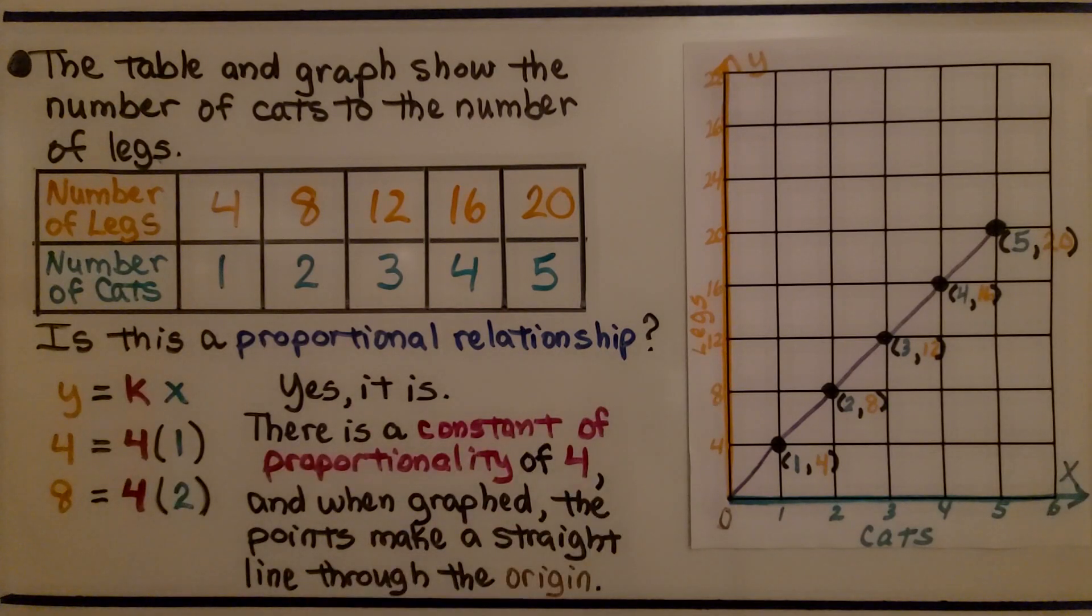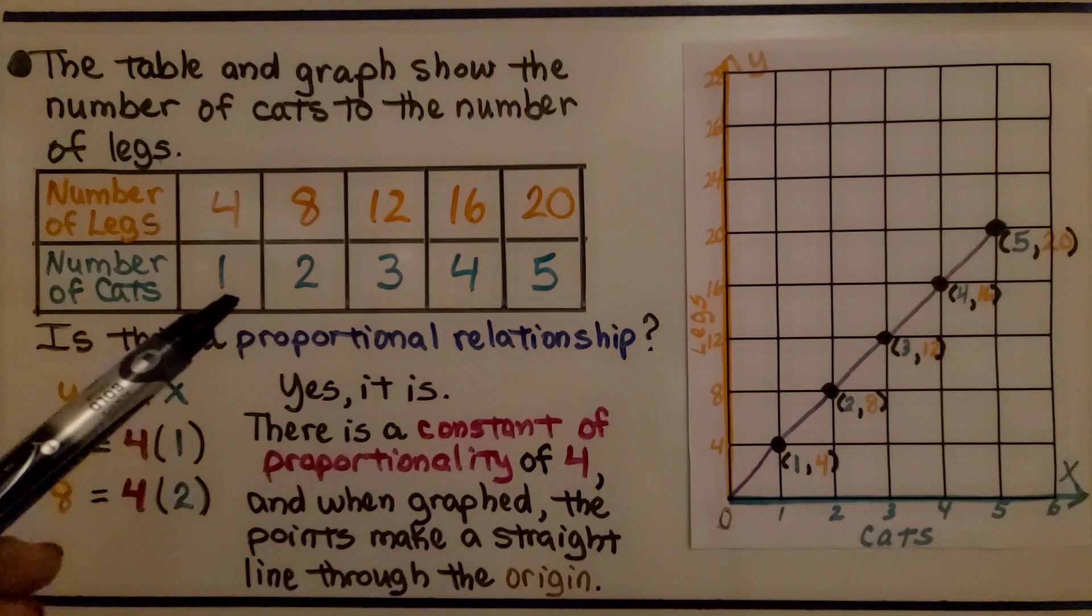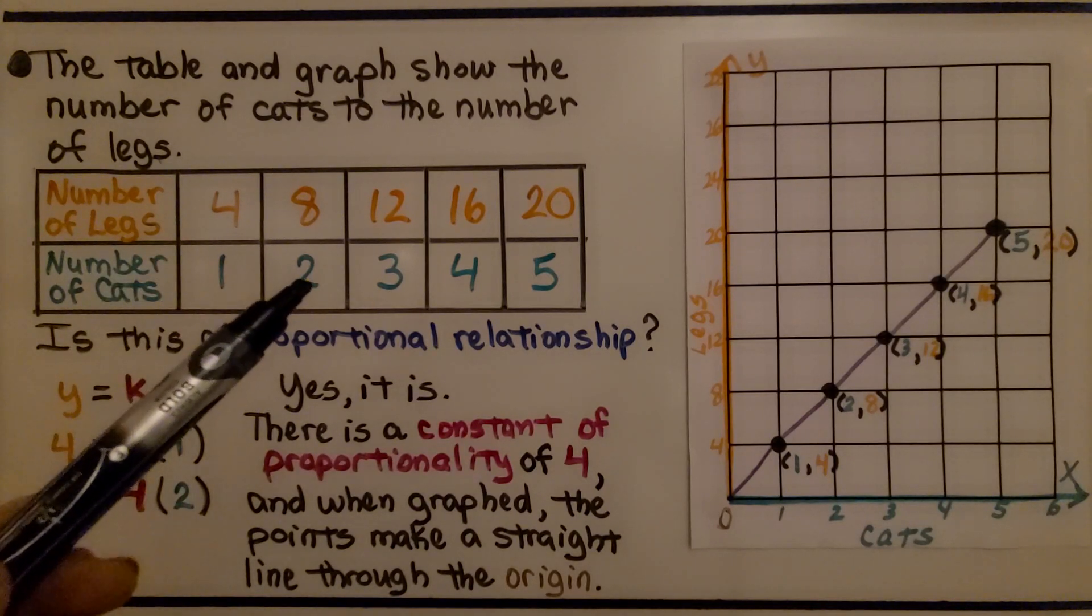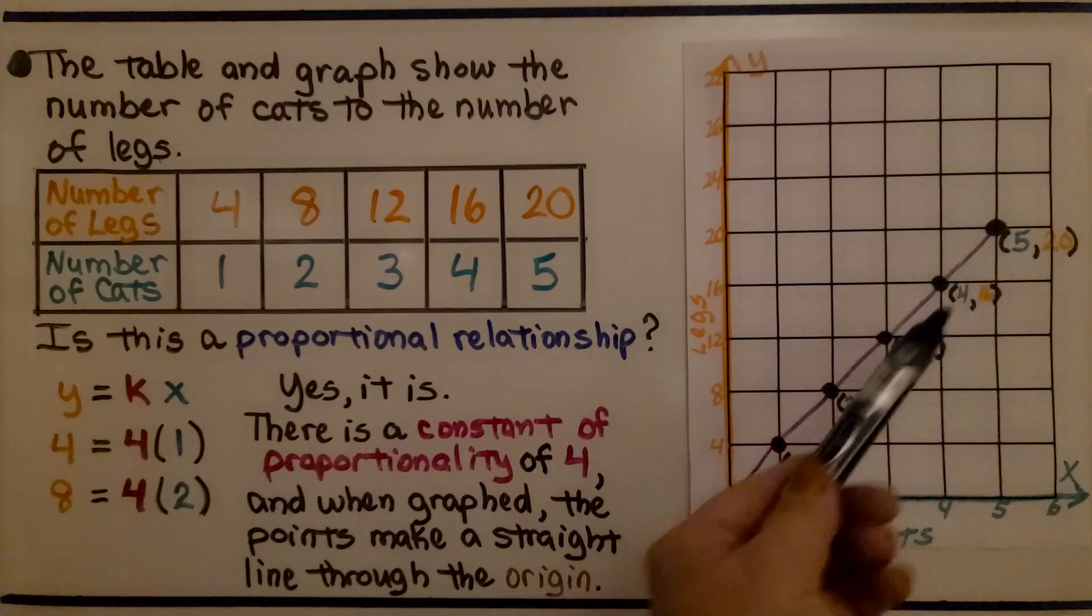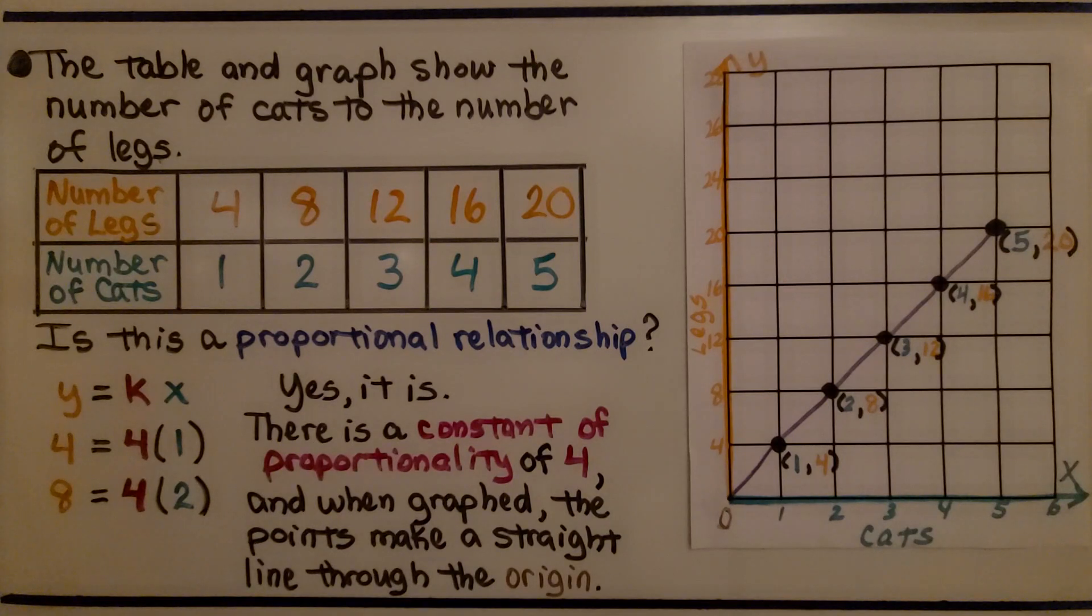The table and graph show the number of cats to the number of legs. If we have one cat, there's going to be four legs. If we have two cats, they're going to have eight legs, and so on. Is this a proportional relationship? Well, using the equation y=kx, k would be 4. That's our unit rate. Four legs to one cat. 4=4×1, 8=4×2, 12=4×3. So yes, it is. There is a constant of proportionality of 4. And when graphed, the points make a straight line through the origin, (0,0). So yes, this is a proportional relationship.